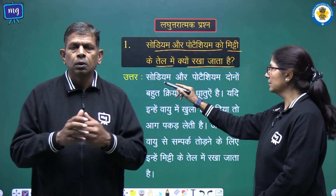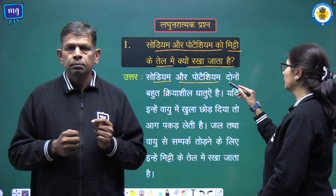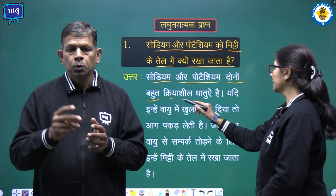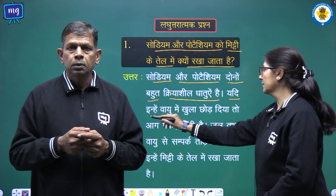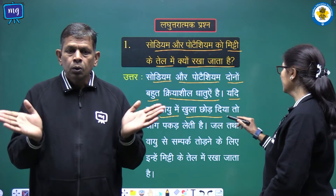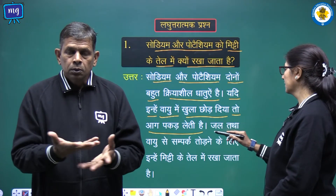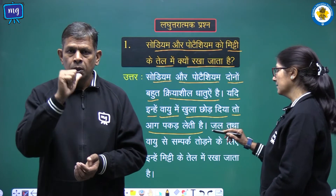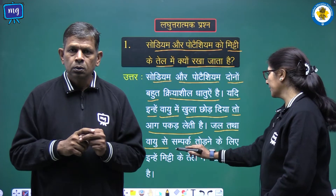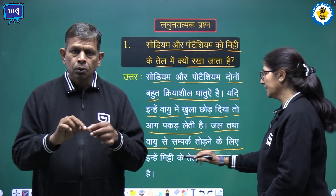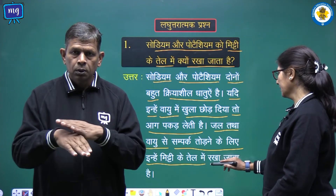Uttar: Sodium aur Potassium dono bahut kriyasheel dhatuein hain. Yadi inhe vayu mein khula chhod diya to aag pakad leti hain. Jal tatha vayu se sampark todne ke liye inhe mitti ke tel mein rakha jata hai.